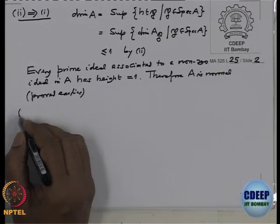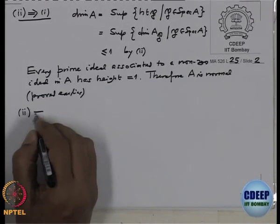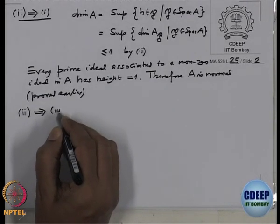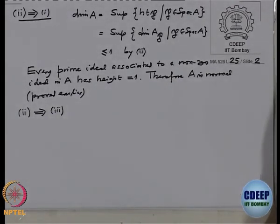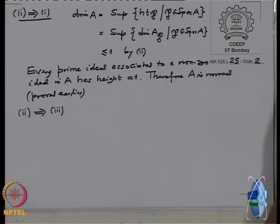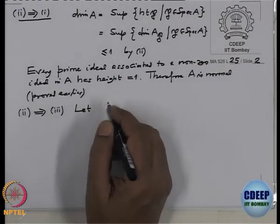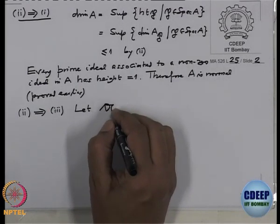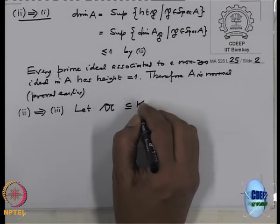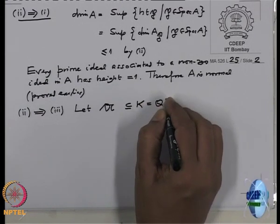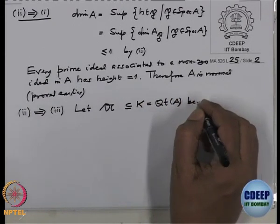Now two implies three. Three says every fractionary ideal is invertible, and two gives us: A is Noetherian and every localization at a nonzero prime ideal is a DVR. Start with a fractionary ideal — we want to prove it is invertible. Let A ⊆ K, the quotient field of A, be a fractionary ideal.